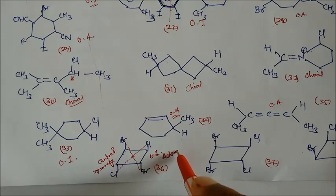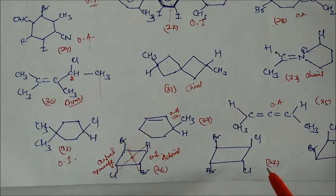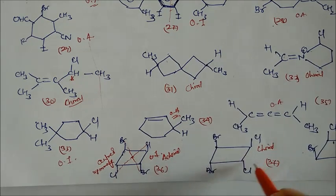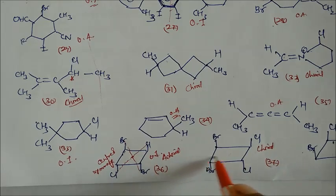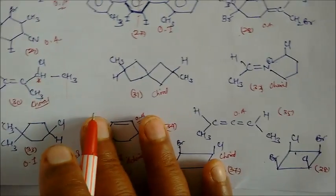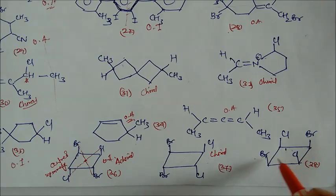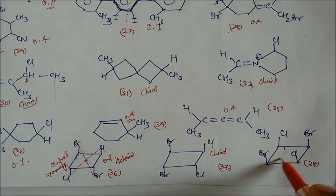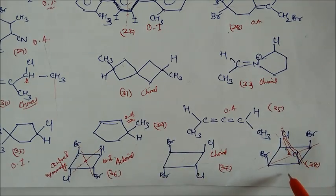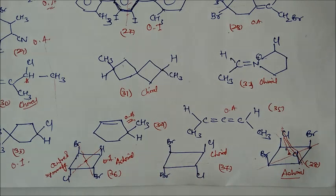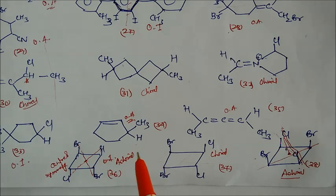Compound 37 is chiral — it is very clear. Drawing symmetry is not possible in any orientation, so this is chiral or optically active. Compound 38, however, if you draw the structure, you will find a center of symmetry, so this is also achiral. These are all the examples — if you review them two or three times, you can identify which compounds are optically active, which are optically inactive, and which are achiral compounds.